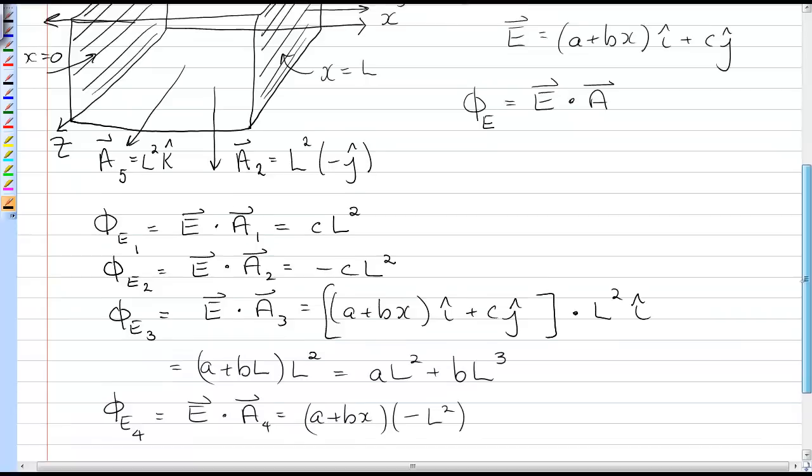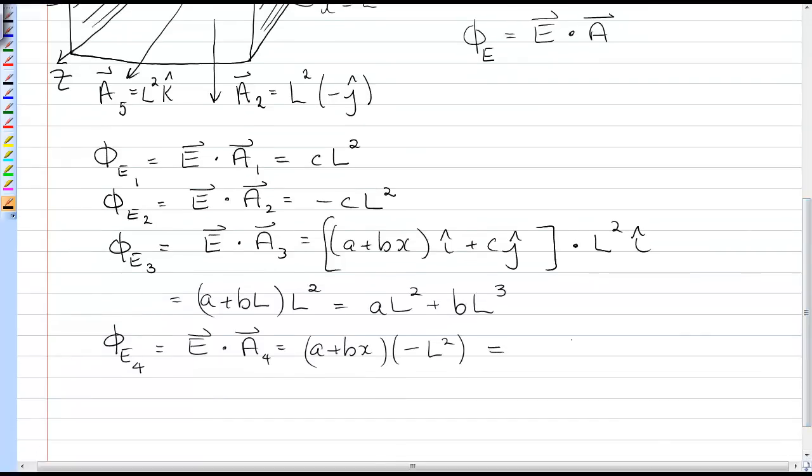And so I put x equals 0 into my expression for the electric field, and I'm just going to get negative aL squared. For E5, there's a k-hat in that, and so I'm going to get 0. And for E6, there's also a k-hat, but there is no k-hat in the electric field, so I'm going to get 0 there as well.